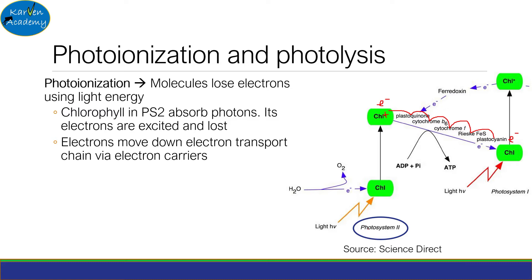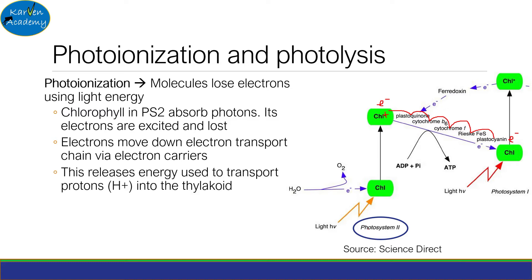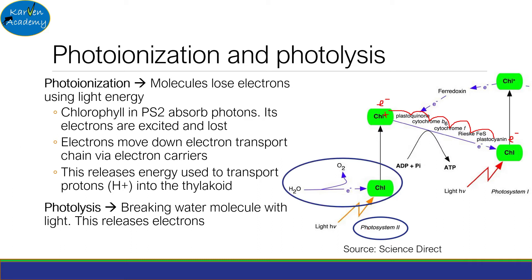Again, you don't need to remember the names of the electron carriers. The energy released by the electrons as they travel down the carriers is used to transport protons into the thylakoid. So that is photoionization.